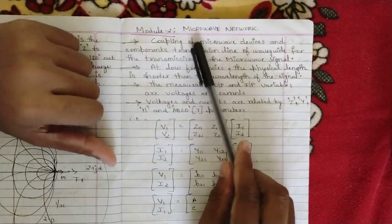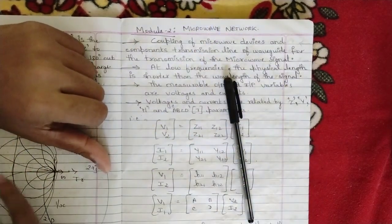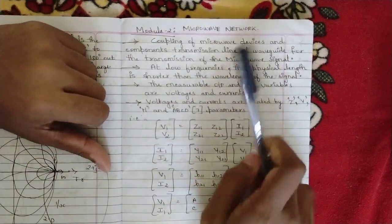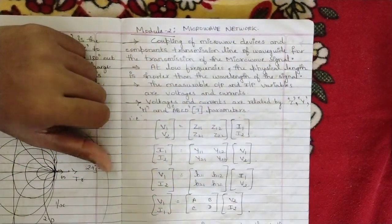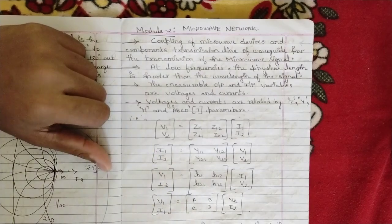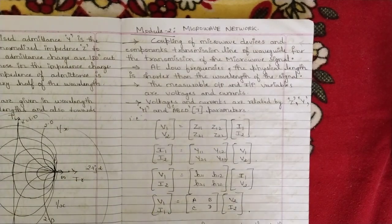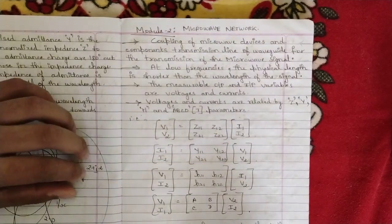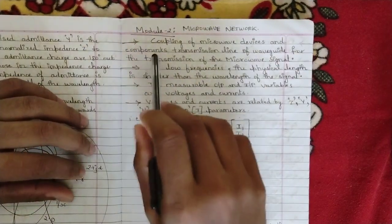In Module 2 we are also going to deal with microwaves. Whatever basics we learned in Module 1, we are going to apply here in the form of a microwave network — that is the name of the module itself. We are going to analyze some network parameters based on voltage and current equations from Module 1, and see how they are interrelated to each other.